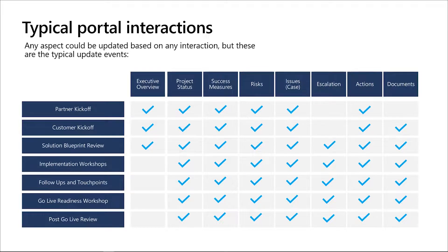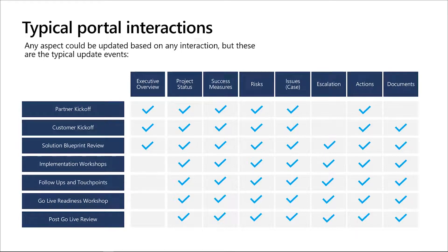Notice that some of these interactions will be automated with time. For example, very soon you will not need to manually maintain a success measure status — those will be automatically maintained as you mitigate your risks and issues. Same with risks and issues: today you will create those manually, but soon those will be auto-generated as an outcome of your review or workshop. But you will still keep the flexibility to create those manually as a standalone artifact. Many more interactions will be added, so stay tuned.